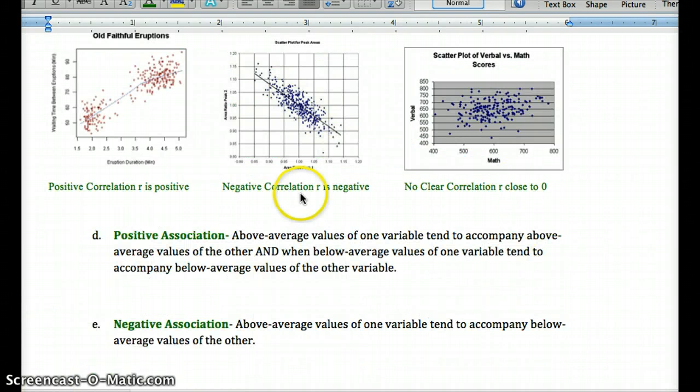So keep in mind, a positive association would mean the values of the two variables increase together, as you see here, with a positive slope, while a negative association means as values of our explanatory variable increase, values of the response variable decrease, as you see here.